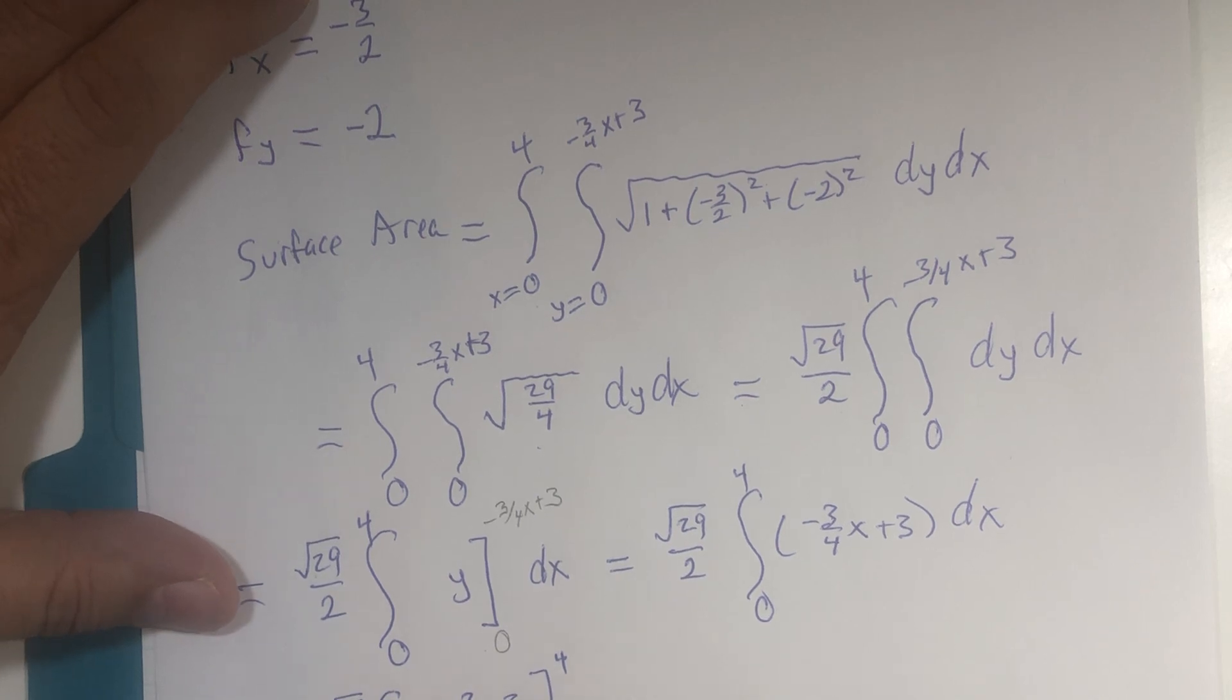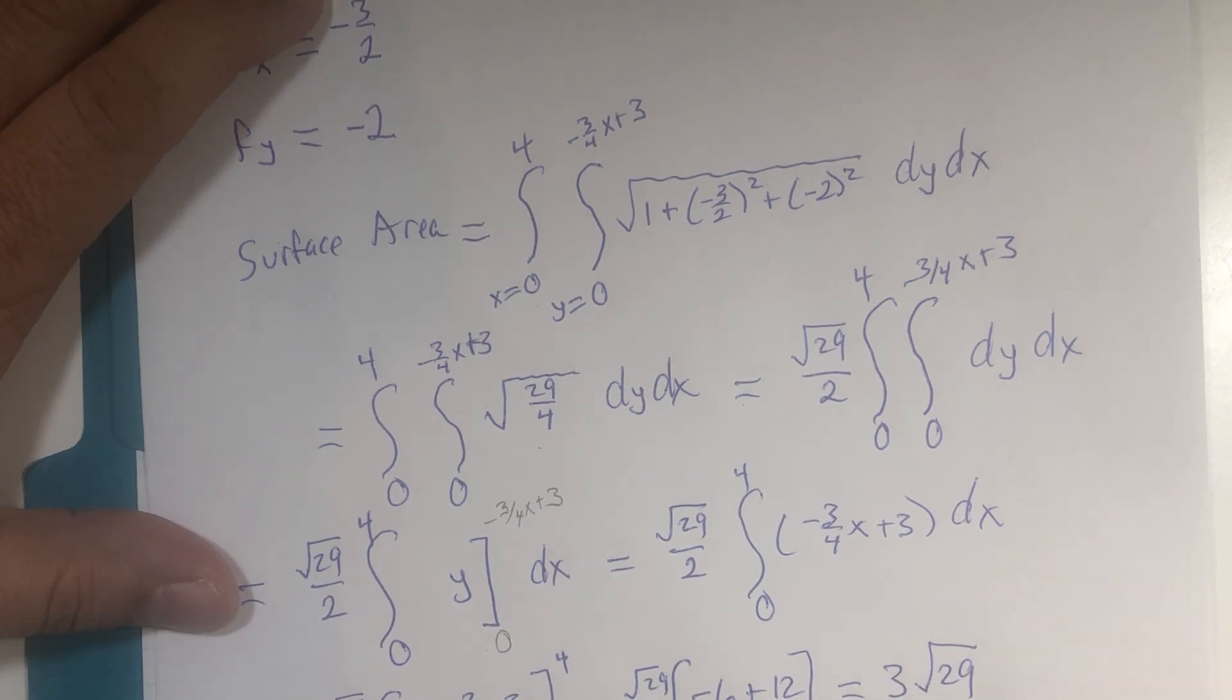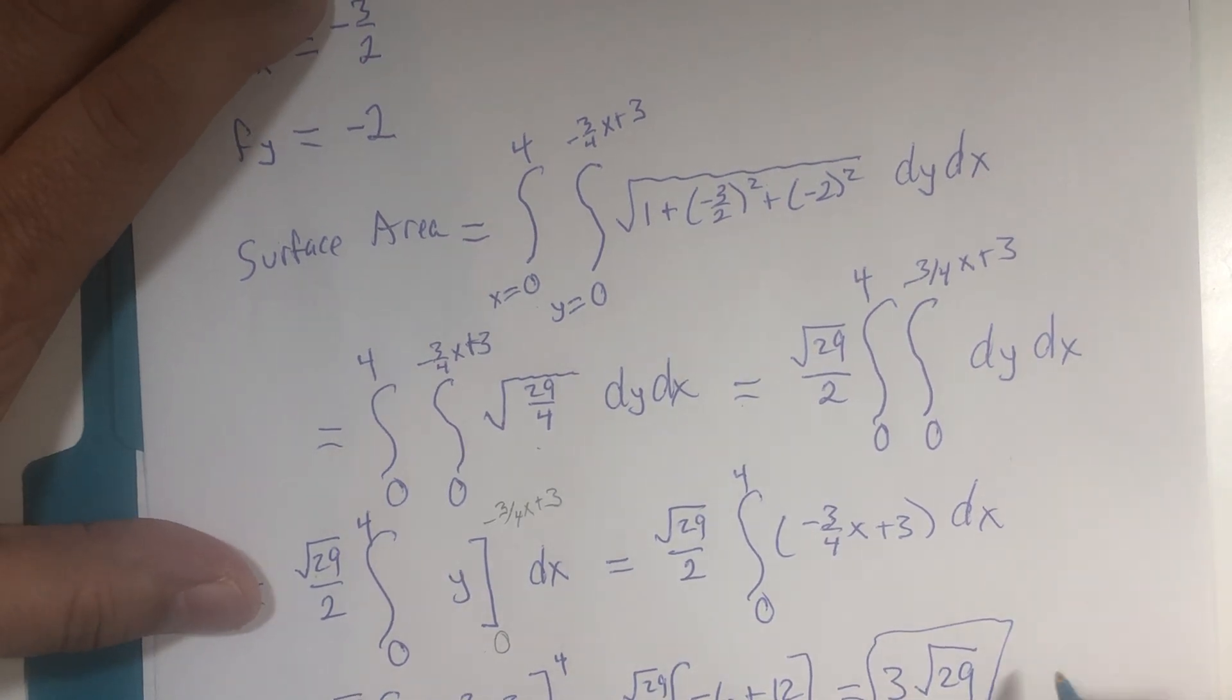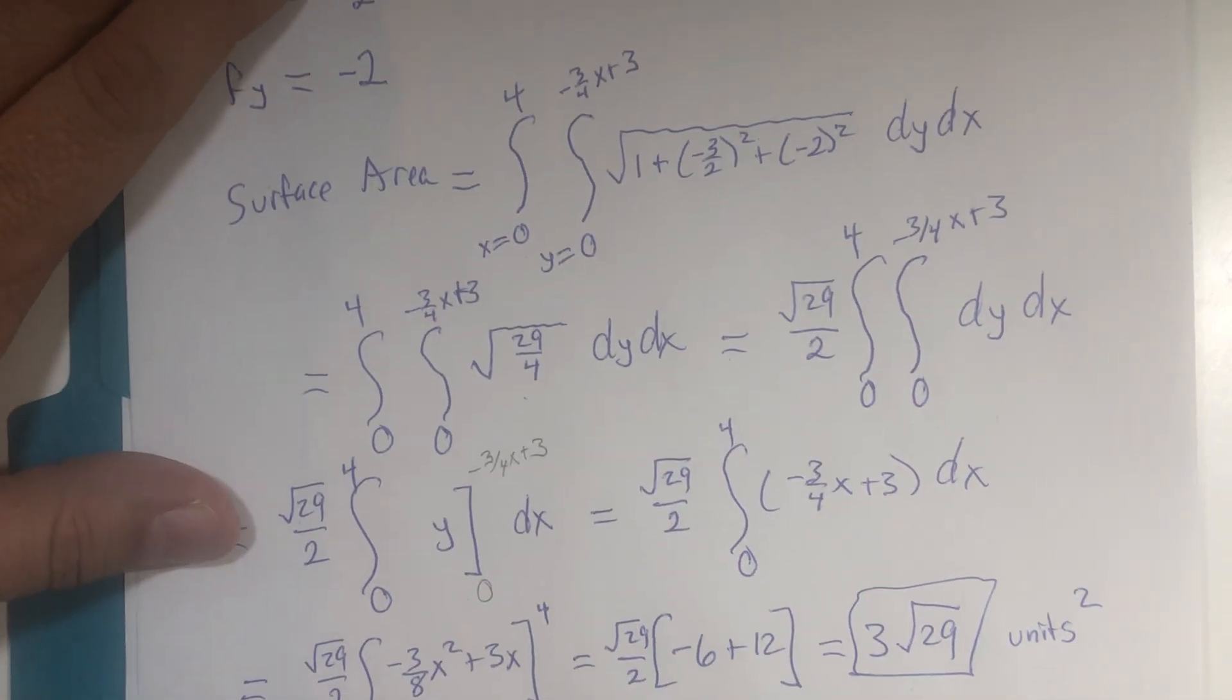If x is 0, these terms are gone. If x is 4. 16 over 8 is 2. That's going to be negative 6. 3 times 4 is 12. If you add these together, you get 6. 6 over 2 is 3 times the square root of 29. And it's an area. So if we were given units, we would think of it with square units.